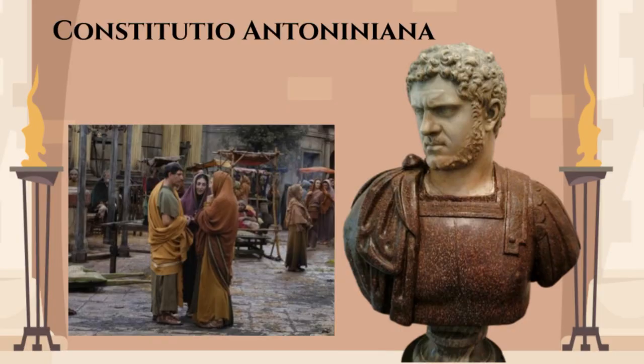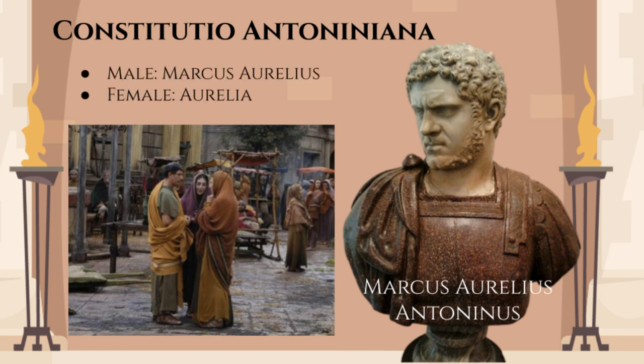Keeping with the Roman tradition of adopting the sponsor's name, tens of millions of ex-Peregrini got the emperor's Praenomen and Nomen. Those were Marcus and Aurelius, since Caracalla adopted the name Marcus Aurelius Antoninus when his father became the emperor. Now every provincial peasant was Marcus Aurelius, and every peasant's wife was Aurelia. By this time, the Praenomen was being phased out from the common people's names, so the name Marcus didn't make much impact.